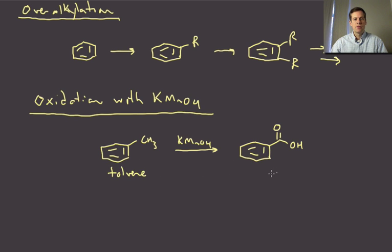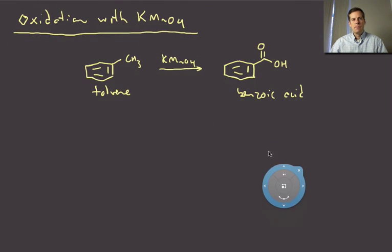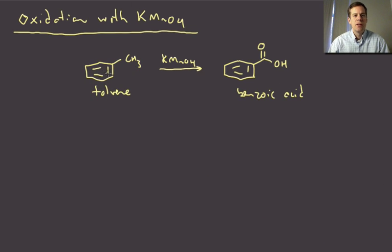Right so in this case we have a molecule called toluene with just a methyl substituent and we can convert that to benzoic acid. Okay now the details of this KMnO4 are such that essentially any alkyl group attached to the benzene will do this reaction as long as there's at least one hydrogen next to the aromatic ring in the so-called benzylic position.